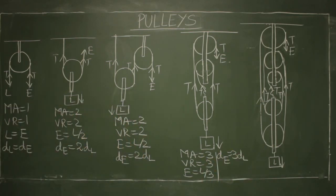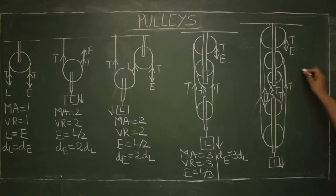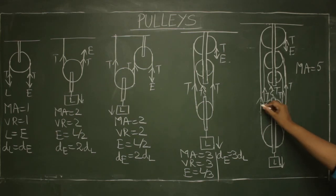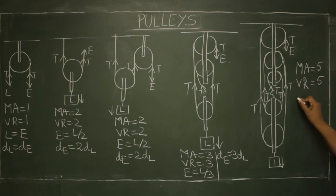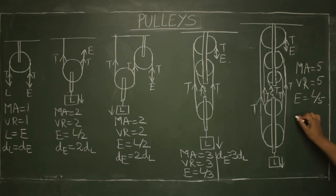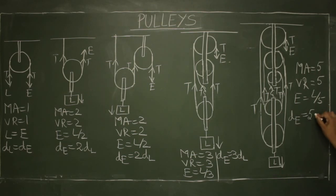So I hope you are able to compare all the pulleys at one go. The last one, just discussed, is the block and tackle system of five pulleys: MA equals five because the load is supported by five strings, so L equals five T and E equals T, giving MA equals five. Velocity ratio is also five. MA of five means effort is five times less than the load, but displacement due to effort is five times displacement due to load. That is the entire description of all types of pulleys.